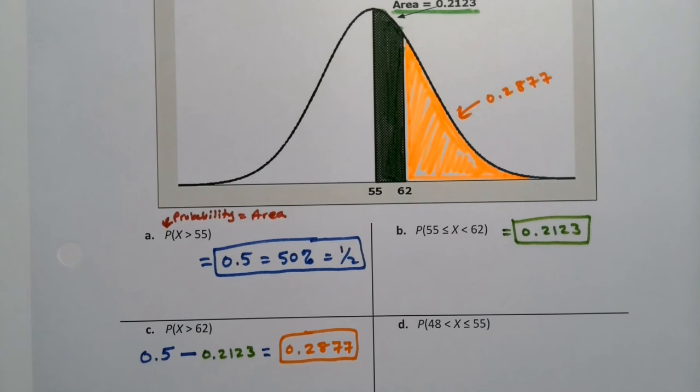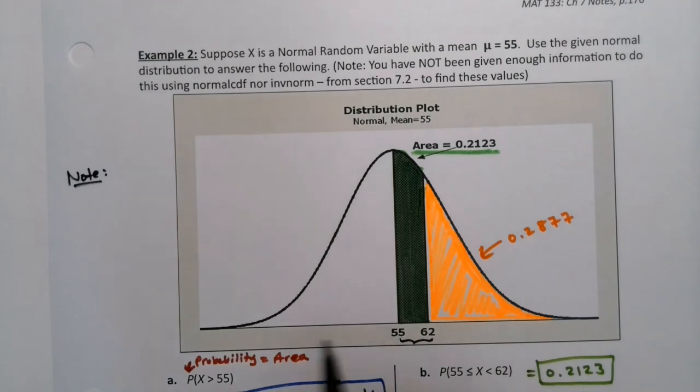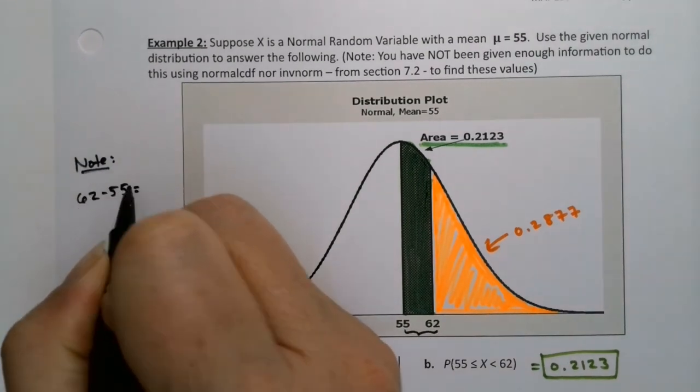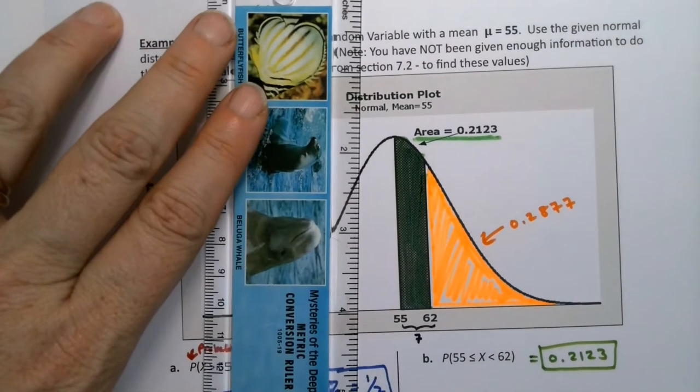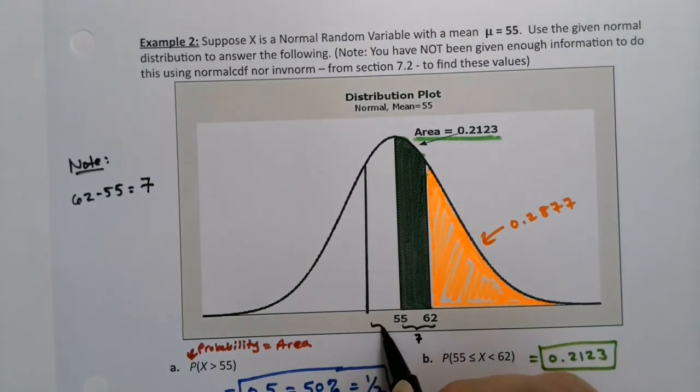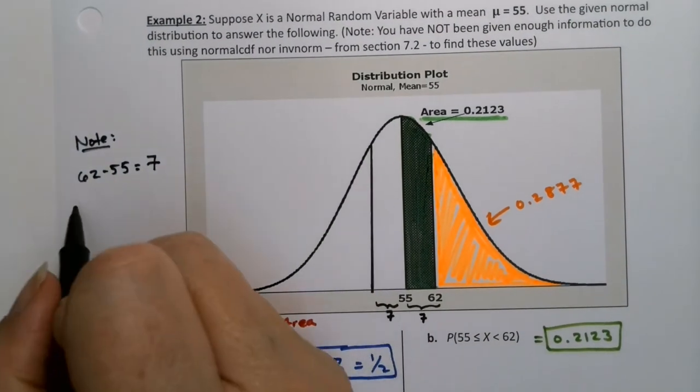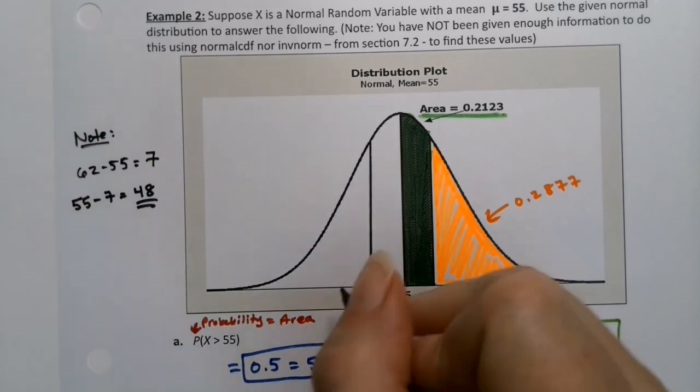So far, the first three were pretty straightforward. But what about 48 is less than X, which is less than 55? Where is this 48 coming from? Notice, what's the distance right there between 62 and 55? 62 take away 55 is 7. So this is 7 away right here. So then why not make a companion on the other side? Same height, same distance. That is also 7 away. What would that new number be? What's 55 take away 7? That would be 48. And that's where the 48 is coming from.